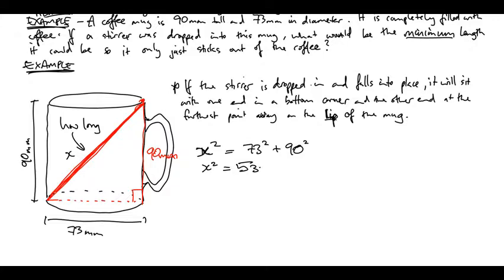X squared is going to be those two added together, plus 5329. It's 13429.